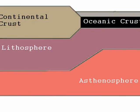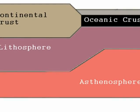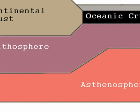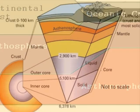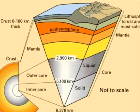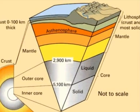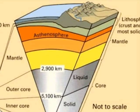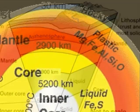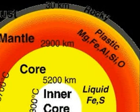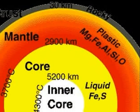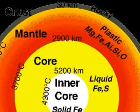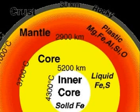The crust is divided into continental crust and oceanic crust. Below the crust lies the mantle, which is divided into the lithosphere and asthenosphere. Below the mantle is the core, which is divided into the outer core and inner core.